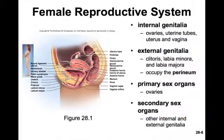The female genitalia include internal and external genitalia. The external genitalia occupy the perineum and consist of the clitoris, the labia minora, and the labia majora. The internal genitalia include the ovaries, uterine tubes, uterus, and the vagina. The primary sex organs in the female are the ovaries. The secondary sex organs are all the other internal and external genitalia listed above.